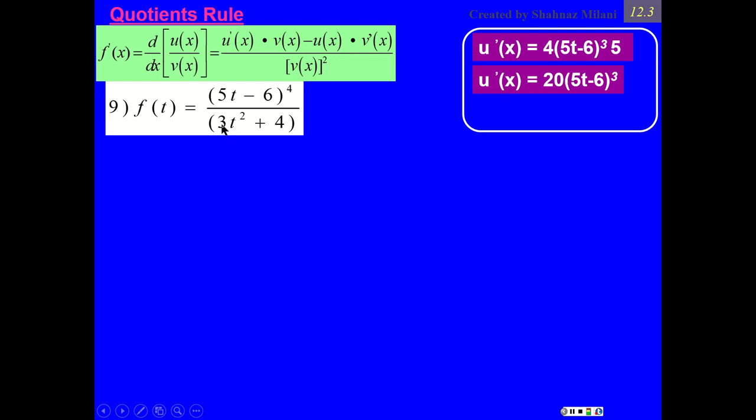Derivative of a bottom, derivative of 3t to exponent 2 plus 4, is 6t.